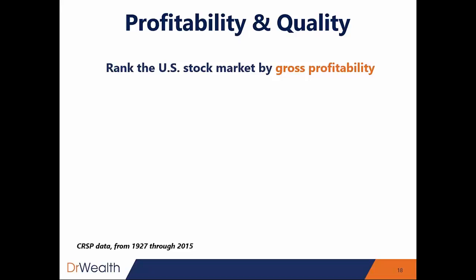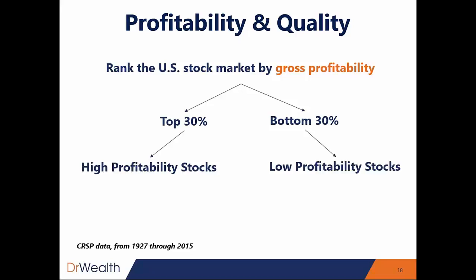What they did was rank the US stock market by gross profitability. They identified the top 30% stocks by gross profitability and also the bottom 30% stocks by gross profitability, then formed a portfolio. So you have a group of high profitability stocks and a portfolio of low profitability stocks, and you long both of them for the same period and then compare their performance.